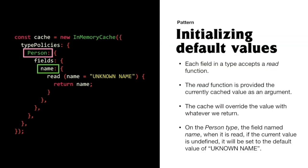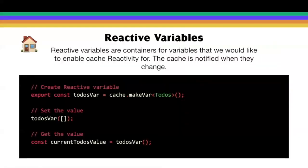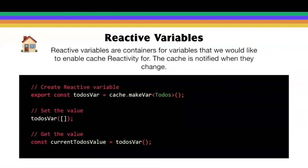There's a new feature that cache policies can be combined with that makes local state management a lot more enjoyable: reactive variables. Reactive variables are containers for variables that we'd like to enable cache reactivity for. When we change the value of a reactive variable, it'll notify the cache and also trigger a re-render if you're using React.